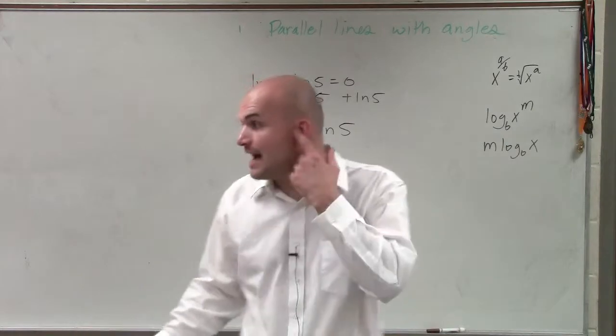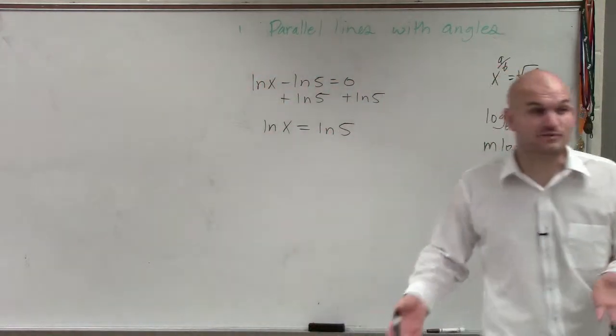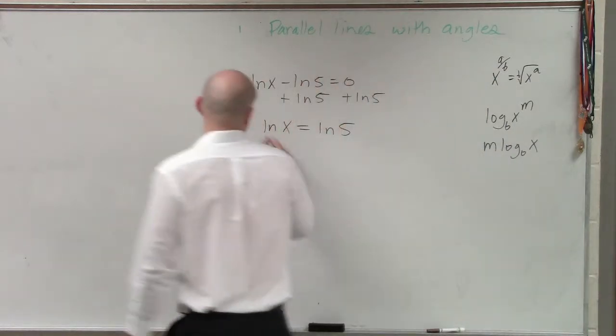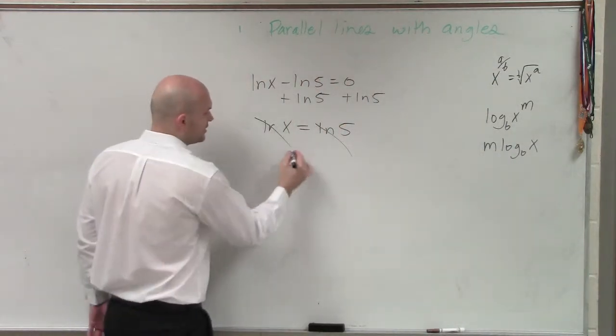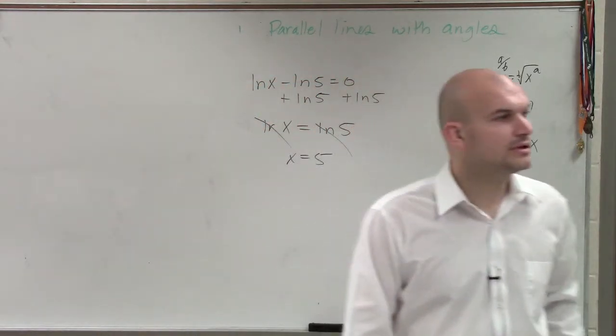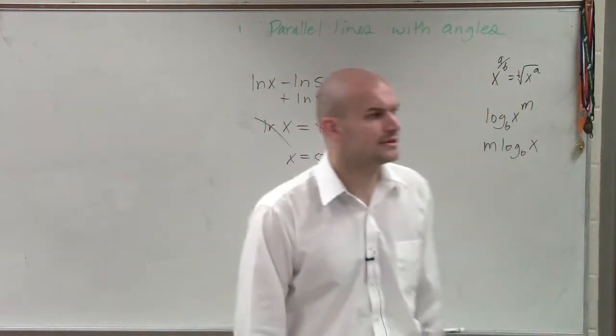Now, what did you know when you have ln's equal to each other on both sides with the exact same base? Right. Then you know now that they're equal to each other, x equals 5. Yes, Ashley? Does that make sense? All right.